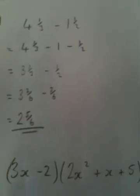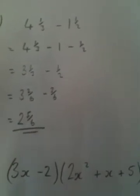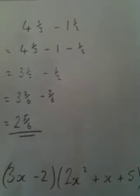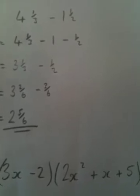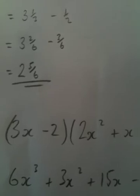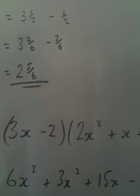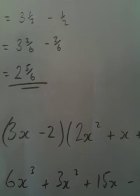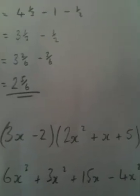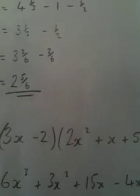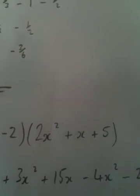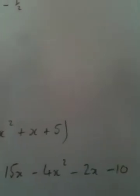On to the second question, multiplying out brackets. We can multiply through here, so three x times all of the second bracket, then minus two times all of the second bracket. Three x times two x squared is, three twos are six, x times x squared is x cubed. Three x times x is three x squared. Three x times five is fifteen x. I've got minus two times two x squared, that's minus four x squared. Minus two times x, minus two x, and minus two times five, minus ten.